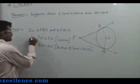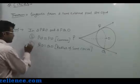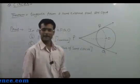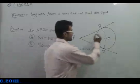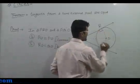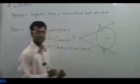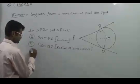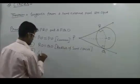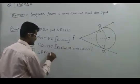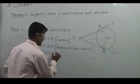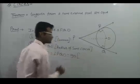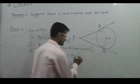Now we have side-side, so we need one angle. We can have an angle because we know that tangent is always perpendicular to the radius, meaning 90 degree angles are formed. So angle PRO equals angle PQO equals 90 degrees. The reason is radius is always perpendicular to tangent.